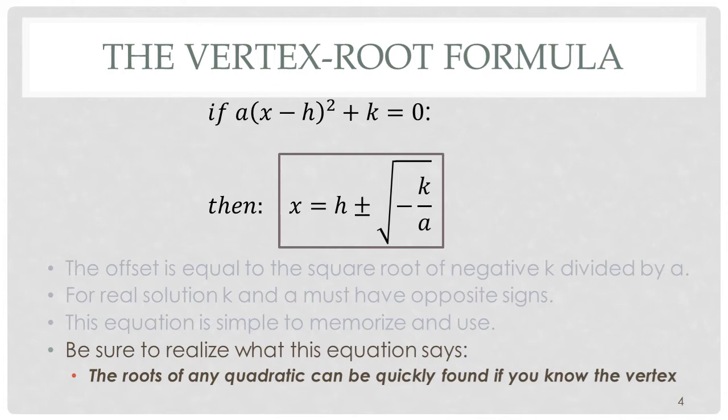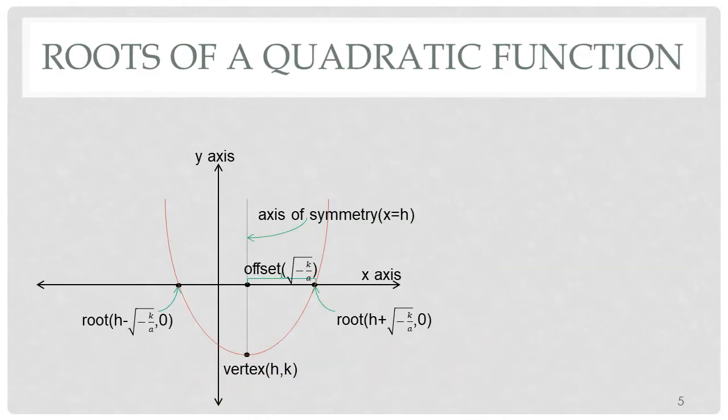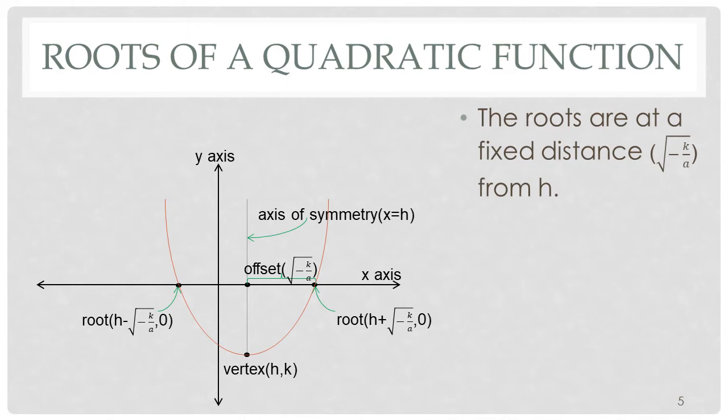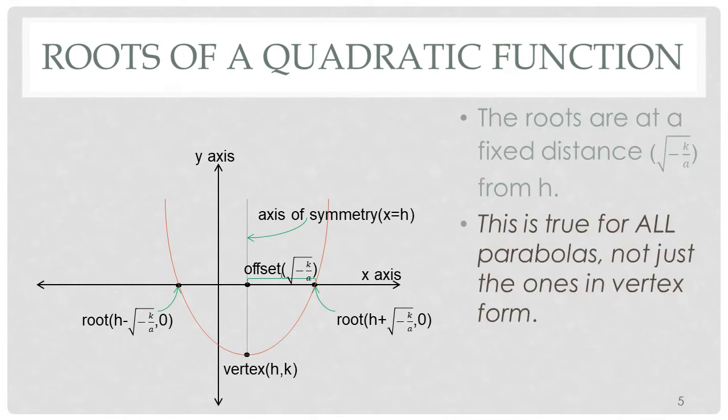Let's look at what this equation says: the roots of any quadratic can be quickly found if you know the vertex. Here is a diagram, a graph of a standard quadratic function. You can see the vertex is at h comma k. Notice in this case k is negative. We have our axis of symmetry and we have our offset. So the roots are a fixed distance, which is the square root of negative k over a from h. And again, this is true for all parabolas, not just the ones in vertex form.